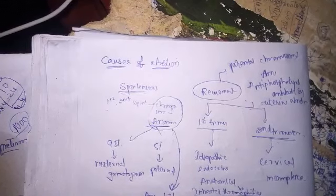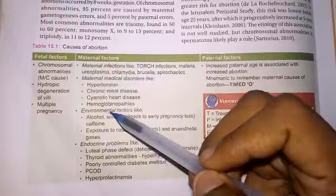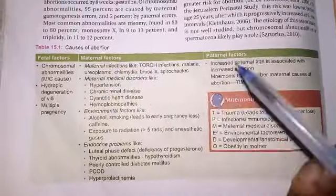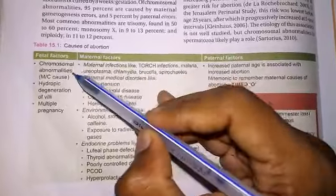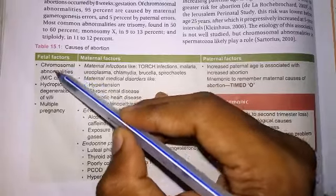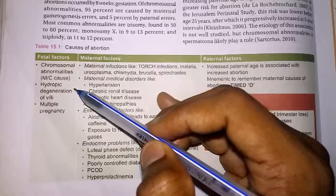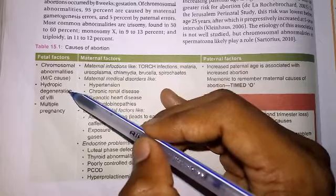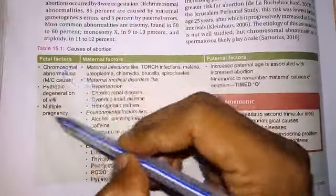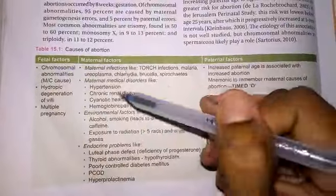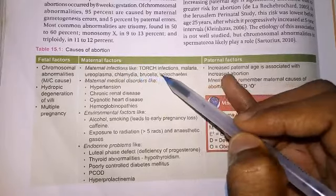We can divide the causes of abortion into fetal factors, maternal factors, and paternal factors. Under fetal factors, we have chromosomal abnormalities — the most common causes of first trimester and second trimester spontaneous abortion — hydropic degeneration, and multiple pregnancies.